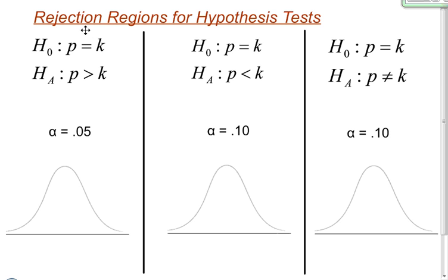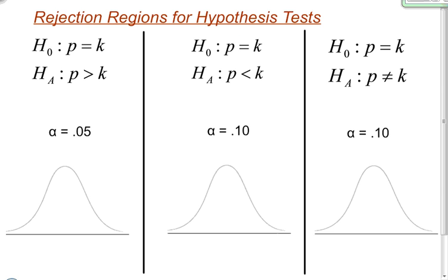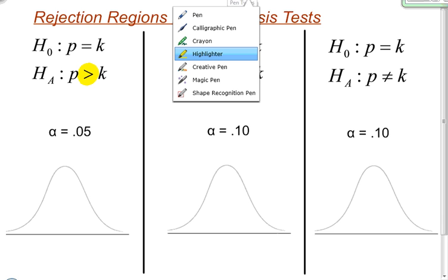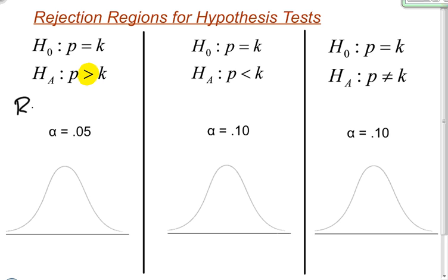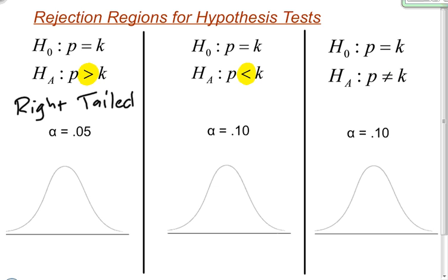In this video I want to show you how you can create your rejection region for a hypothesis test. I have three different sets of null and alternative hypotheses, with different levels of significance, and I'm going to draw the picture. One of the first things you should look at is the symbol in your alternative hypothesis. The greater-than symbol leads to a right-tailed test, the less-than symbol leads to a left-tailed test, and the not-equal-to symbol leads to a two-tailed test. Let's focus on the right-tailed test first.